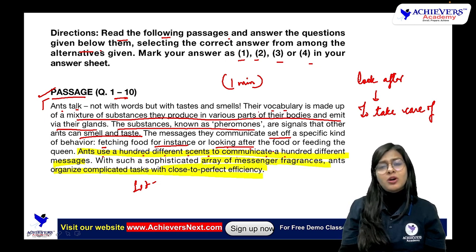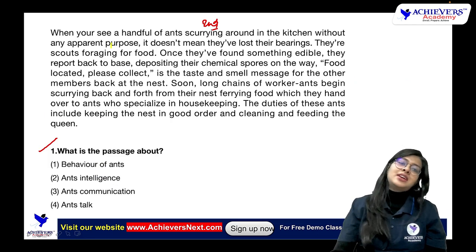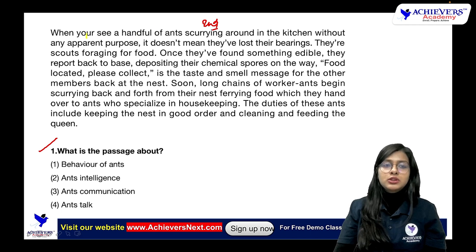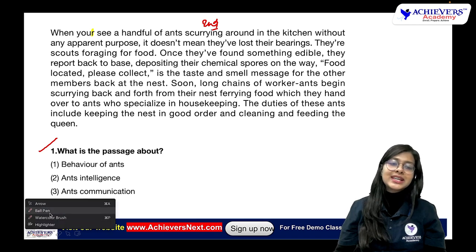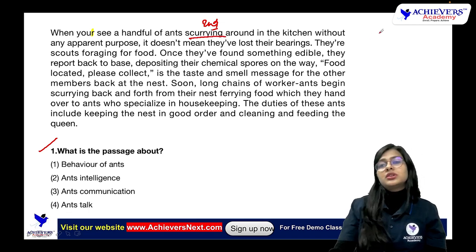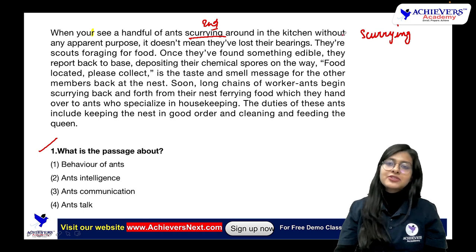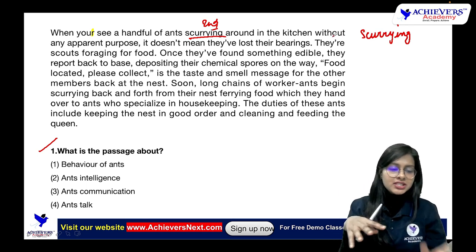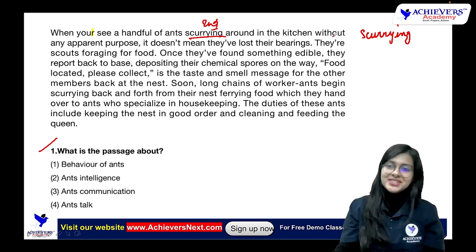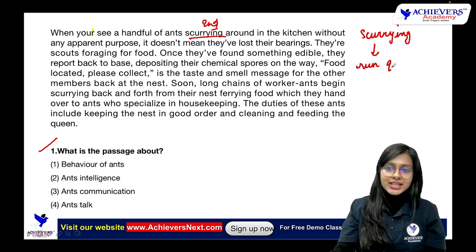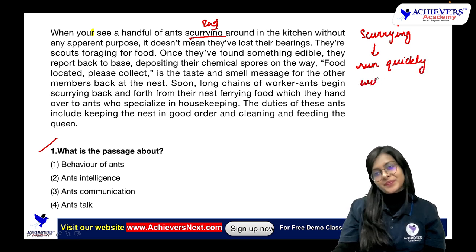When you see a handful of ants scurrying around the kitchen — what is the meaning of 'scurrying around'? You have to learn vocabulary simultaneously. Scurrying means to run quickly with short small steps. Ants have small steps, so scurrying means to run quickly with short steps.